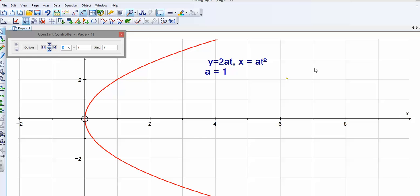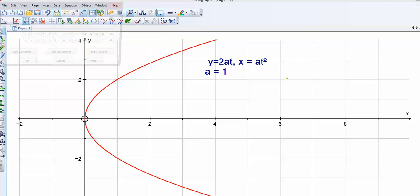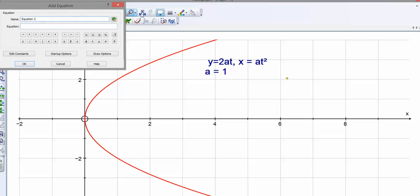The other question was, what happens if I swap x and y around? So if I do that, if I change my y to x and x to y, so I'll make x is 2at and y is at squared, what does that look like?